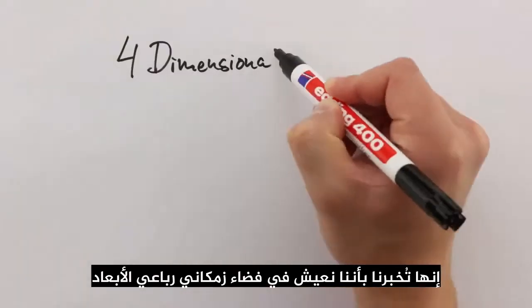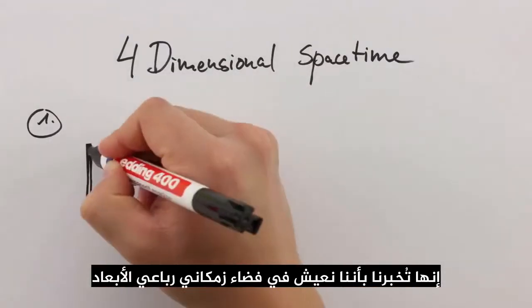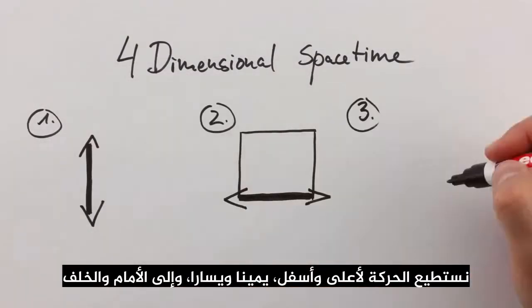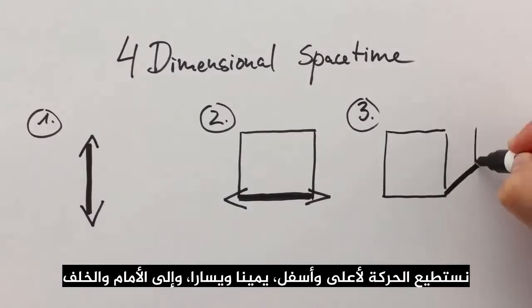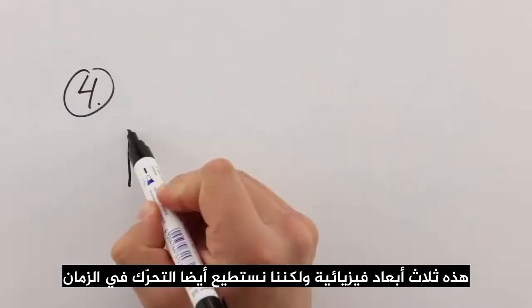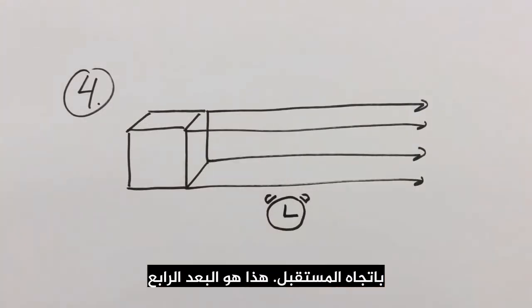It tells us that we all live in a four-dimensional space-time. We can move up and down, left and right, backwards and forwards — that's three physical dimensions. But we also move in time, in the direction of the future. That's dimension number four.